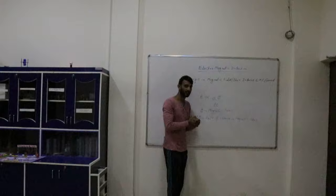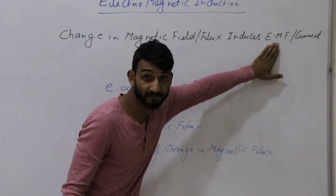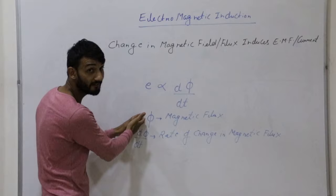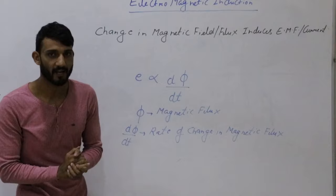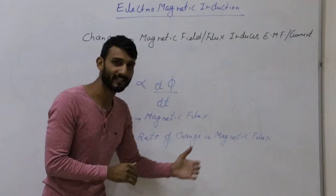Now coming to Faraday's second law of electromagnetic induction, which says that E — the EMF or the current — is directly proportional to dΦ/dt. Φ is the magnetic flux, and dΦ/dt is the rate of change in magnetic flux. So the greater the rate of change in magnetic flux, the greater the EMF and the greater the current.